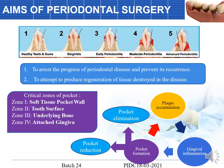There are four critical zones of a pocket. The first zone is the soft tissue wall of the pocket. The second zone is your tooth surface. The third zone is the underlying bone. The fourth zone is your attached tissue. There is also a vicious cycle: whenever a patient has plaque accumulation, if they correct it themselves it does not proceed to the next stage of gingival inflammation or gingivitis.